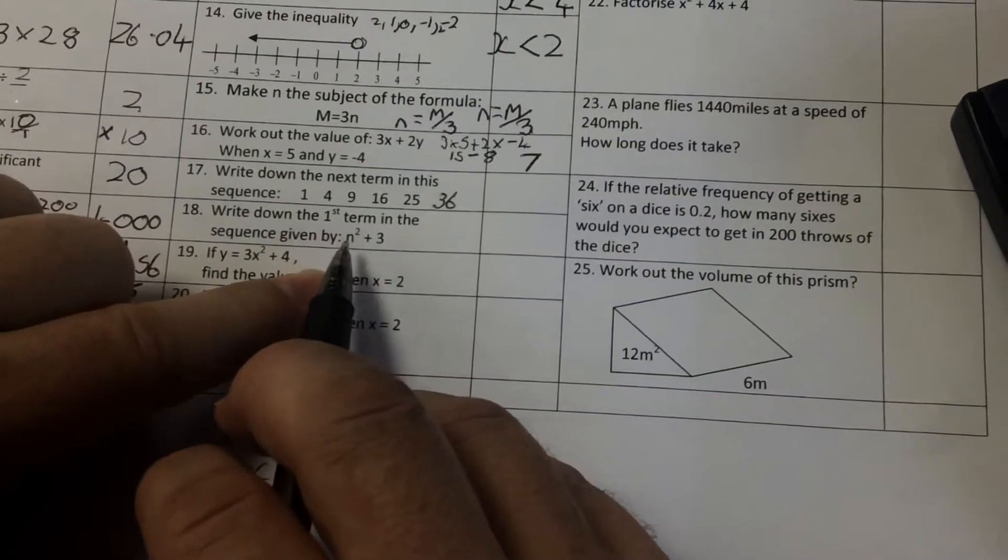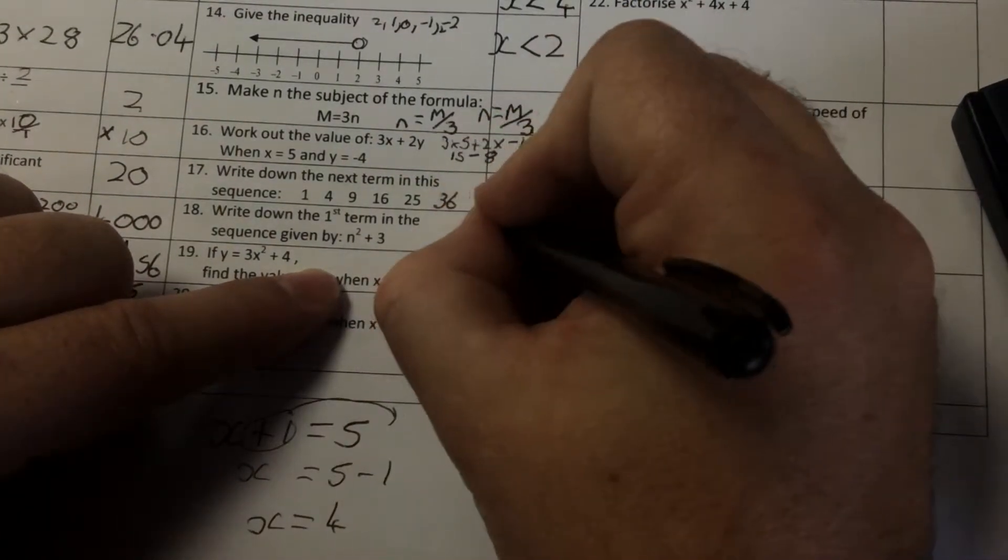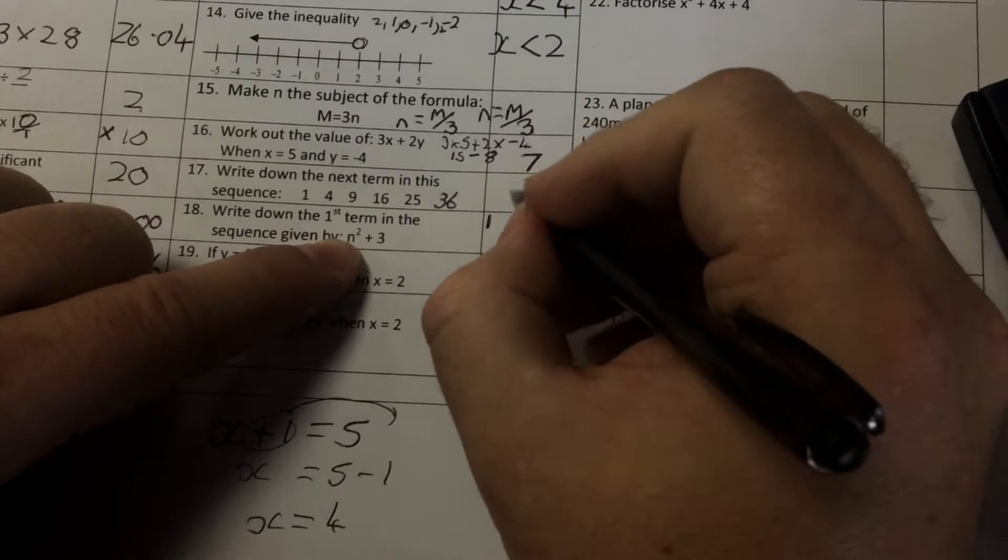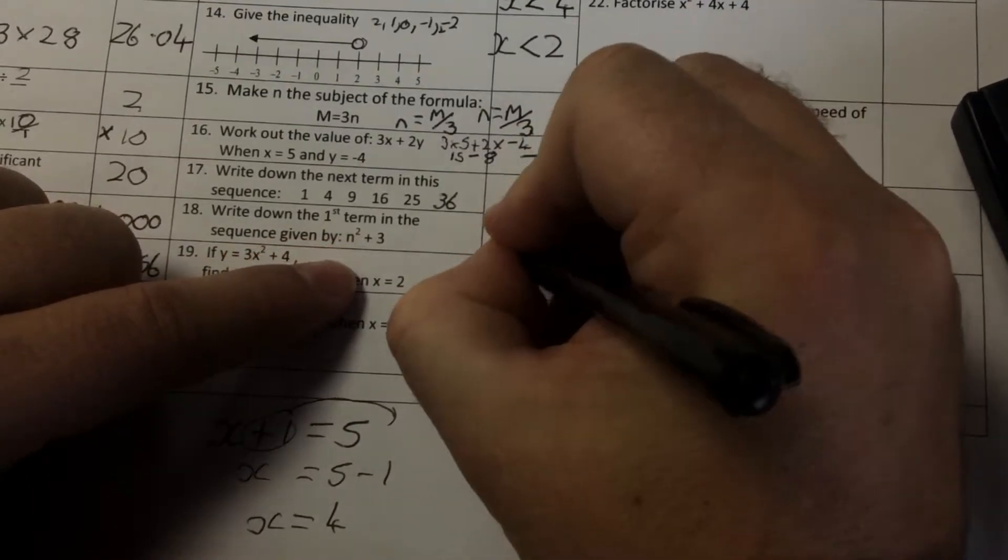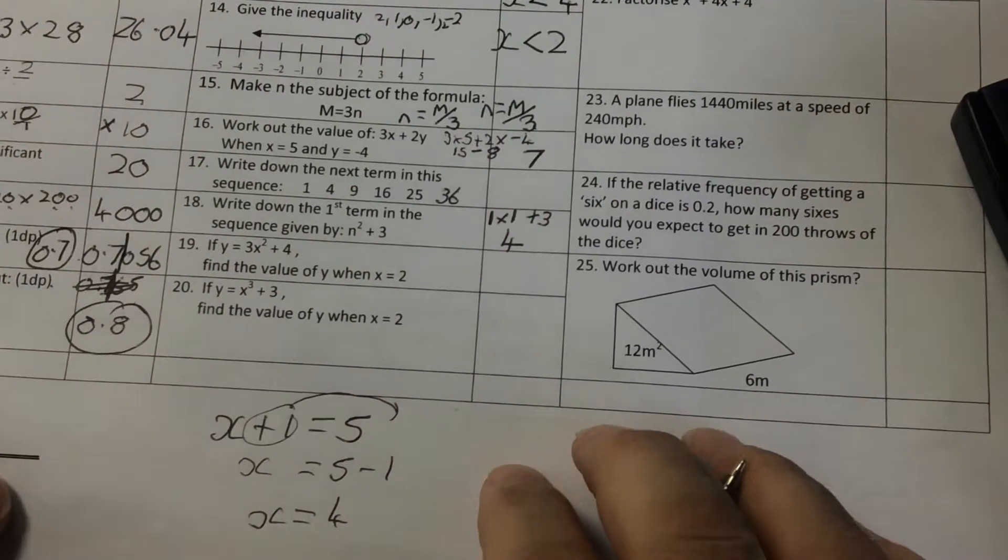The first term in the sequence, you've got to put 1 into this. So the first term in that sequence, you're putting 1 in. N squared means times itself. So it's 1 times 1, add 3. And the answer to that one is 4.